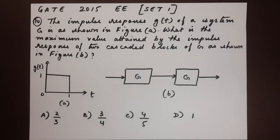The impulse response g of t of a system g is as shown in figure a. What is the maximum value attained by the impulse response of two cascaded blocks of g as shown in figure b?